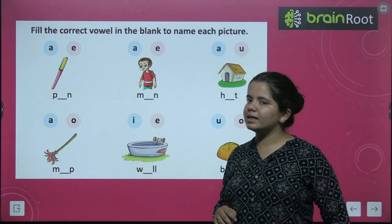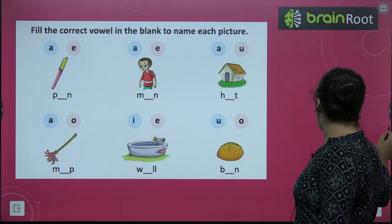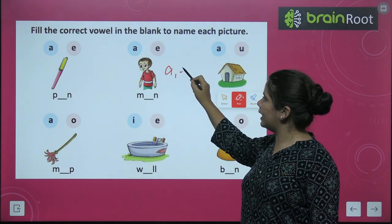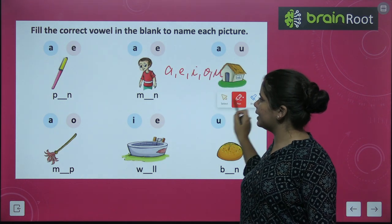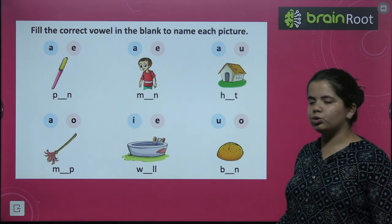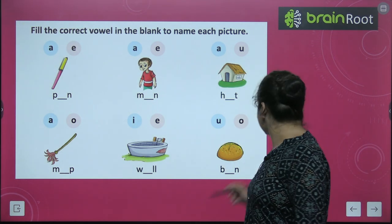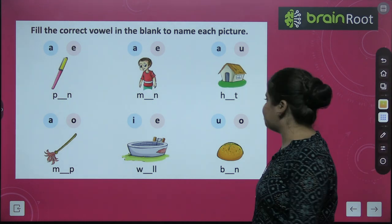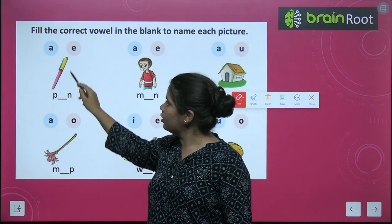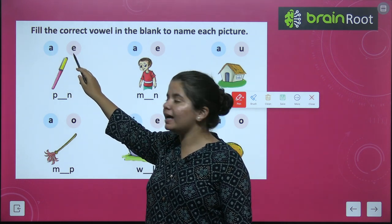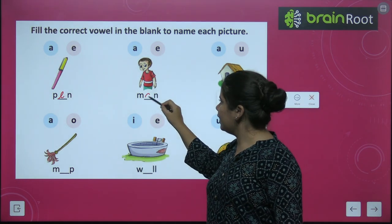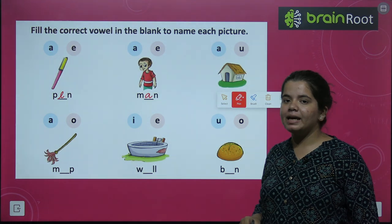Now we have to fill the correct vowel in the blank. There are five vowels: A, E, I, O, U. We have to write the correct vowel in the blanks — two options are given. First is P-N: look at the picture — it is a pen, so E goes here — P-E-N, pen. Next: M-A-N, man — A goes here.